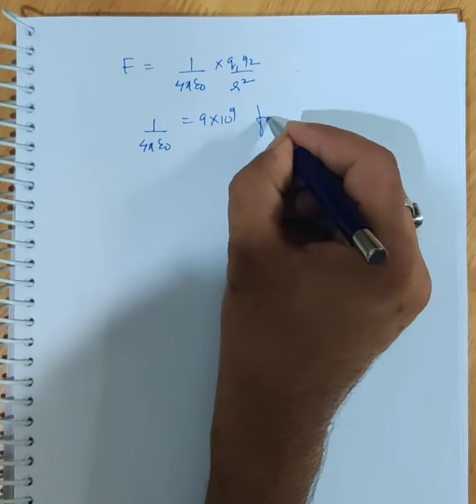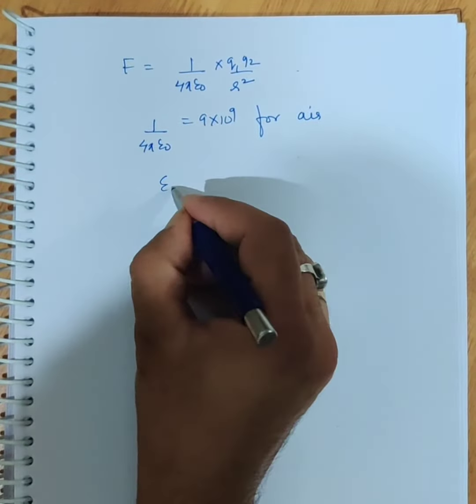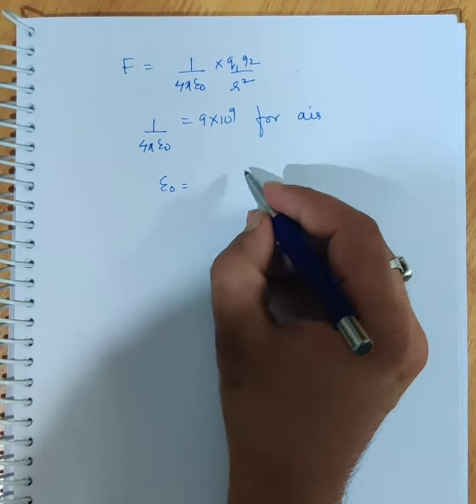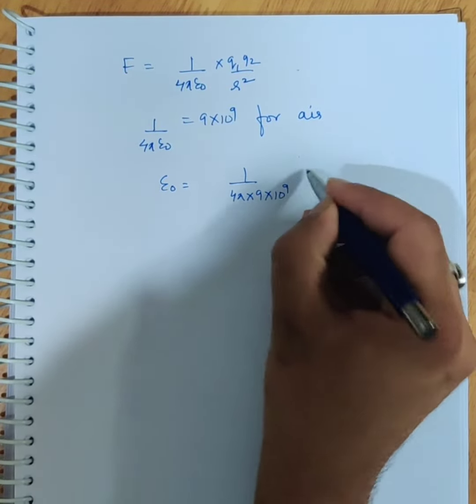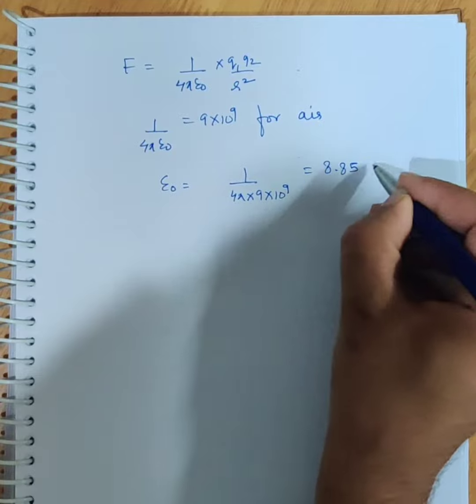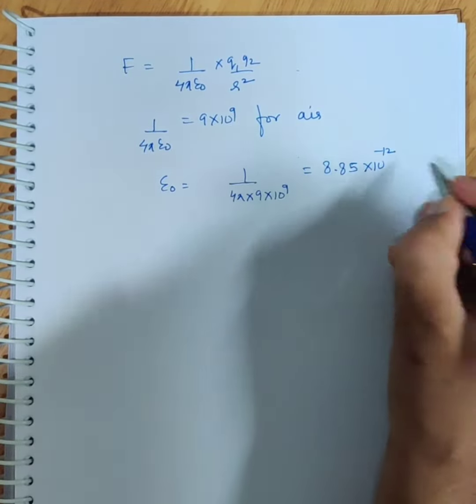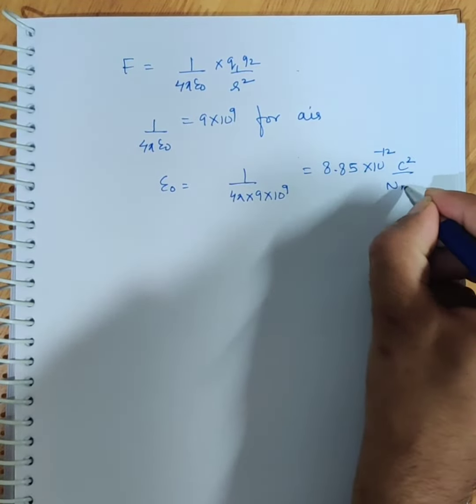So epsilon not's value, if you solve it, you get one upon four pi into nine times ten to the power nine, which comes out to be 8.85 times ten to the power minus twelve. And its unit will be coulomb square upon newton meter square.